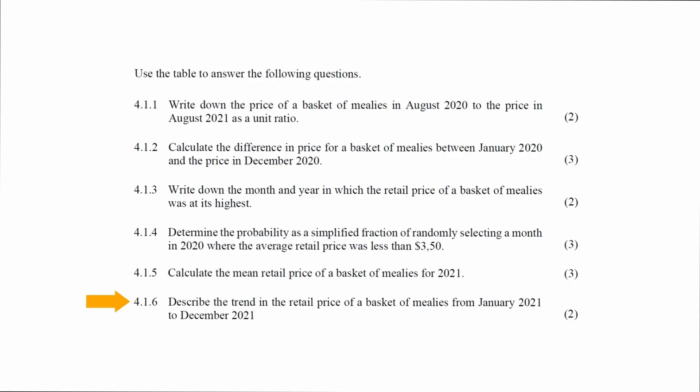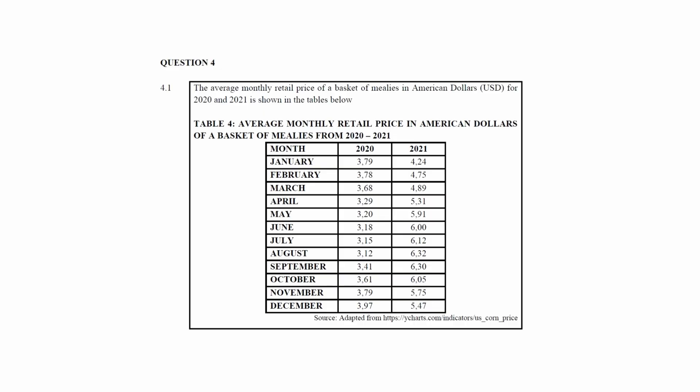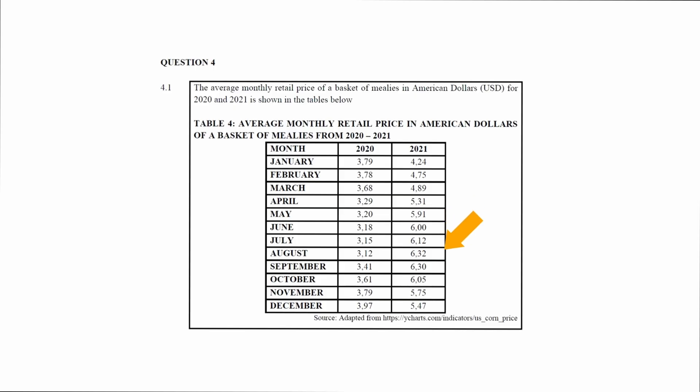In question 4.1.6, you have to describe the trend in the retail price of a basket of mealies from January 2021 to December 2021. From the table, the average retail price increases from January to August 2021 and then decreases from September to December 2021.